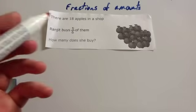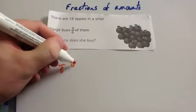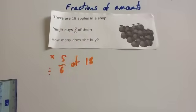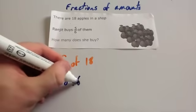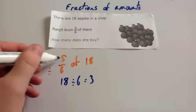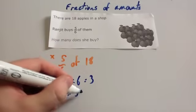So we're going to do 5 sixths of 18. Remember, we divide by the bottom and times by the top. So we're going to do 18 divided by 6. And 18 divided by 6 is 3. Then we take the 3 and we times it by the top. So we do 3 times 5. 3 times 5 is 15.